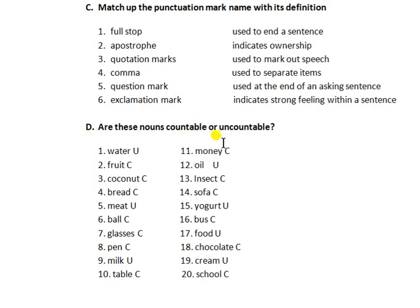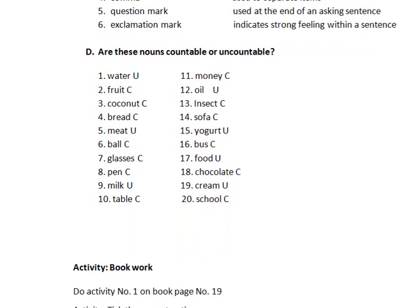Now for countable and uncountable nouns: countable nouns are those we can count, and uncountable nouns are those we cannot count. You have to do this activity carefully and properly — practice it in your rough notebook. Thank you, take care of yourself and your loved ones.